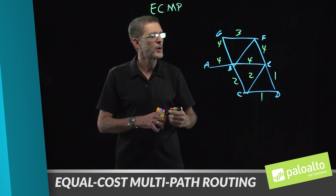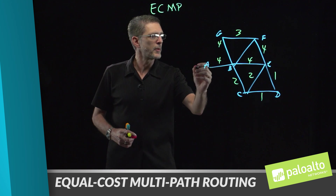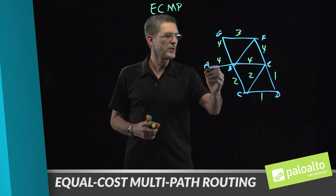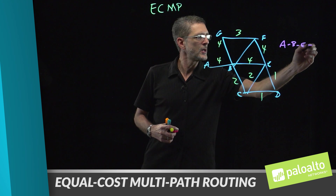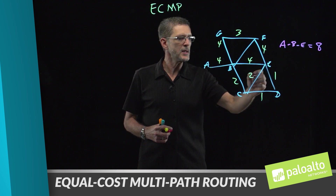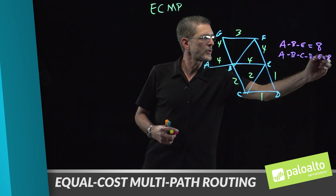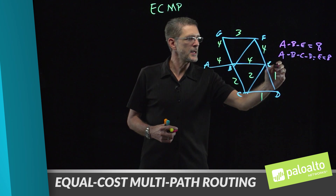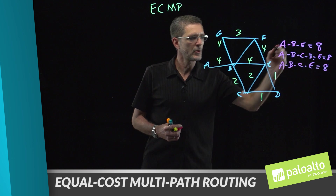Without equal cost multipath routing, if we want to get traffic from point A to point E, we have multiple routes to go, all with equal cost. From A to B to E gives a cost of 8. From A to B to C to D to E also equals 8. We also have a third route going A to B, B to C, and C to E — also with a cost of 8.